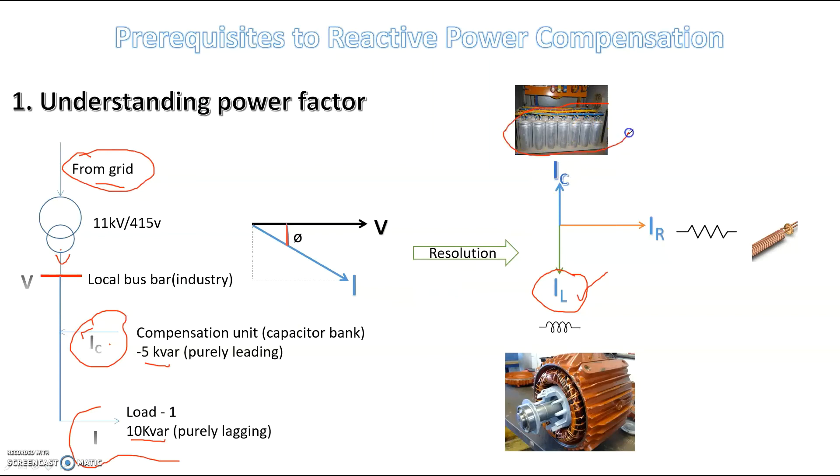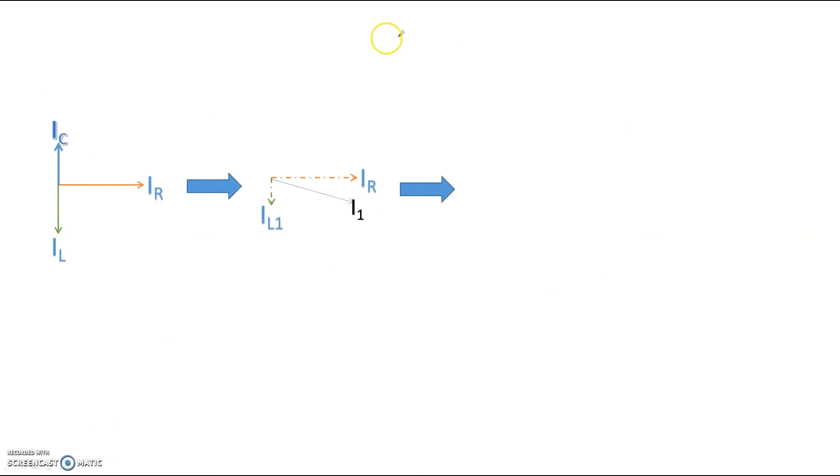If you understand here, if I have the current IC here, which is going to negate the effect of IL, what will happen is, the value of IL will reduce to IL1 and the current I1 will be this. You have to observe that this particular angle is reducing. This would be the new scenario after tapping the capacitor bank. This will be phi 1. Earlier, we had this scenario when no compensation was there, no IC was there. So you clearly can understand here that cos phi 1 is greater than cos phi. So the power factor is basically improving.